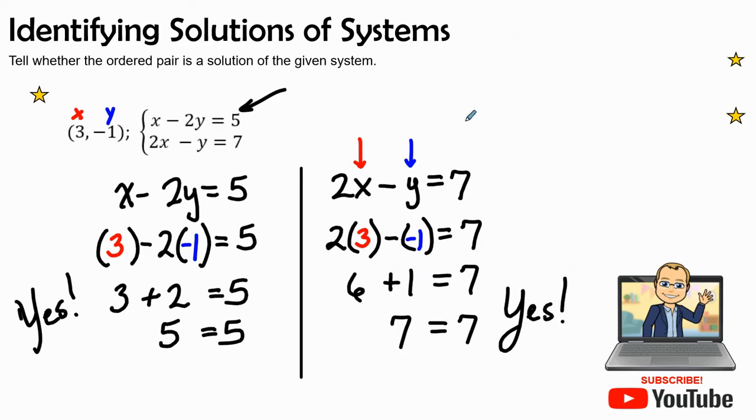So once again, here is my first linear function, my second linear function, and here is where the point, the solution, the point of intersection is (3, -1). It is shared. That point is shared or both lines cross at that point of intersection.